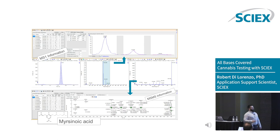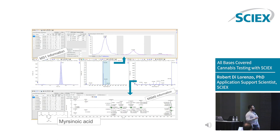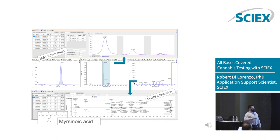We can look at the mass accuracy of the fragments from predicted structures, look at the MS1 information and how it would overlay with the theoretical, and then overlay the experimental MS/MS and assign formulas to those MS/MS fragments to ensure they can indeed come from that particular structure. The mass errors of those fragments are really nice and tight. This was done just by importing a mol file of myricinoic acid.